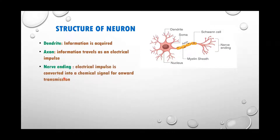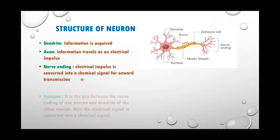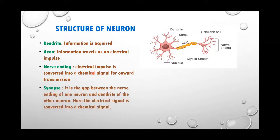At the nerve ending, the electrical impulse is converted back to a chemical signal, because dendrites can only take in chemical signals. A synapse is the gap between the nerve ending and the next dendrite of a neuron, where the electrical signal is converted back to a chemical signal.